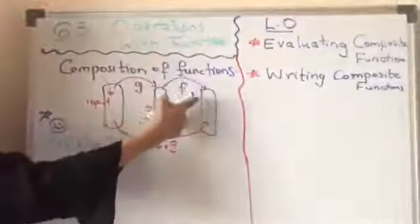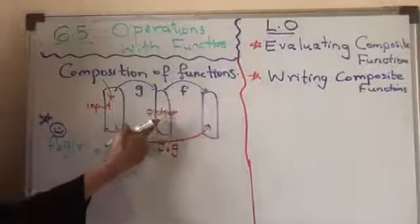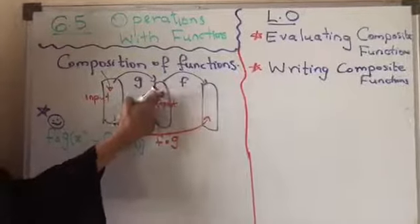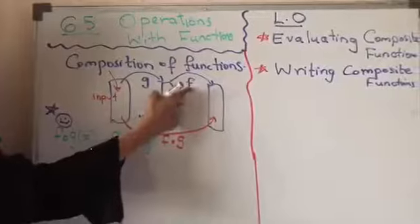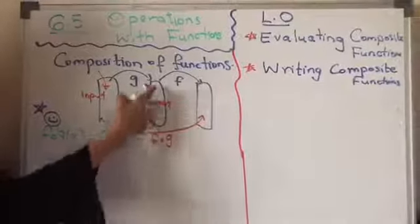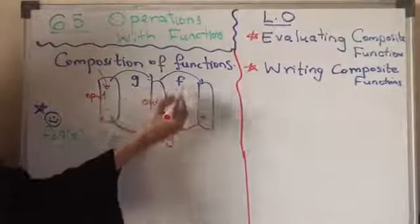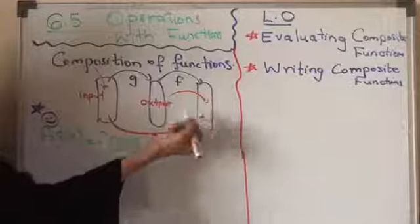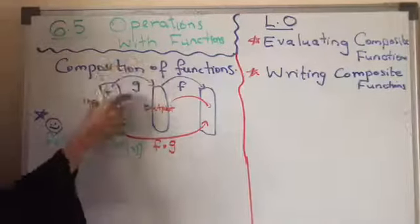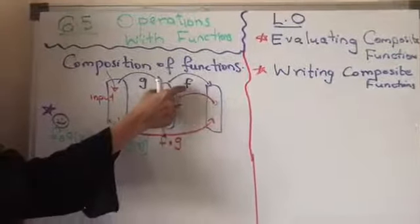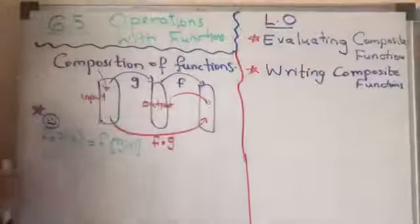Now we have another function, another machine working together. This will take its input as the output of this function. So what is the input of f? Input of f is output of g, and this f will have another output. That means composition of functions will have two functions in which one uses its input as the output of some other function.